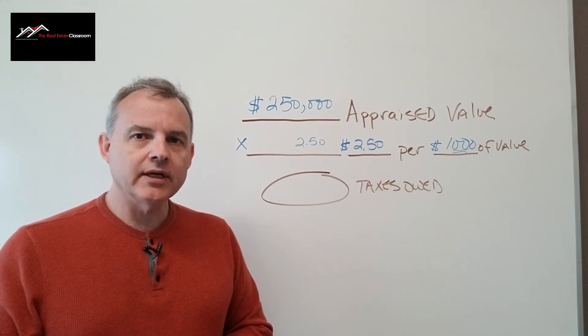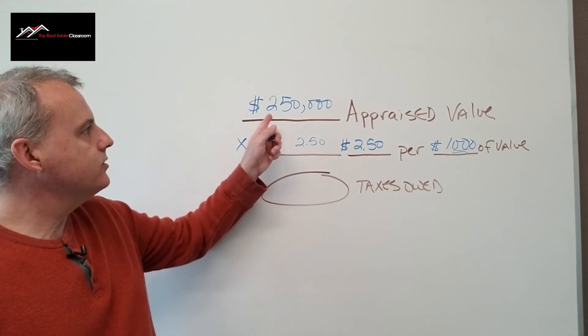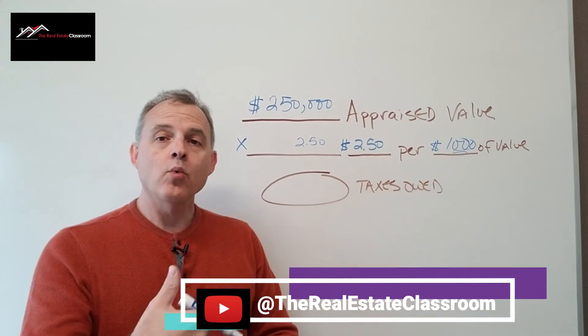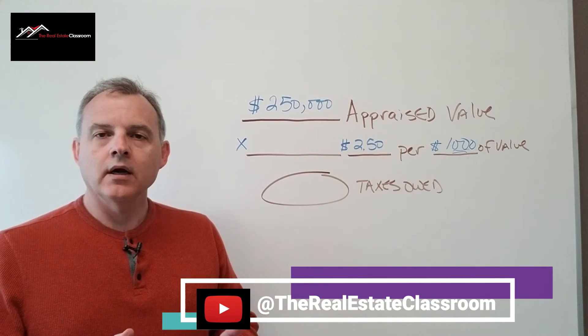So taxes owed is $6,250. Now let's look at a different scenario here. Let's say that it's $250,000 times $2.50 per $1,000 of value.